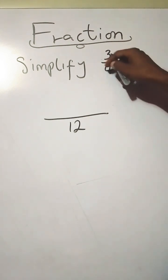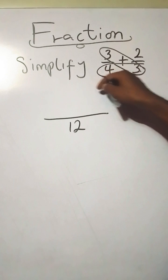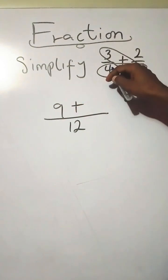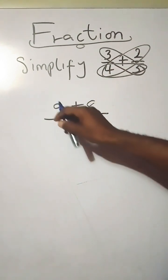Next you multiply 3 and 3, that's the butterfly method. Now we're doing 3 times 3 which is 9, plus 4 times 2 which is 8.